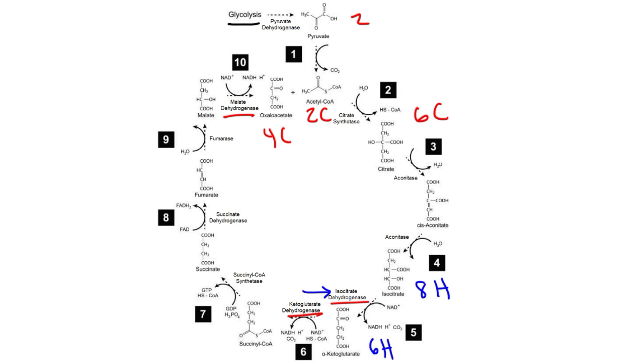Now whenever there's a reduction reaction, there is an oxidation reaction. Isocitrate has six carbon atoms, and alpha-ketoglutarate has five carbon atoms. Notice that we lost a carbon in the form of CO2. So step five was a decarboxylation reaction.